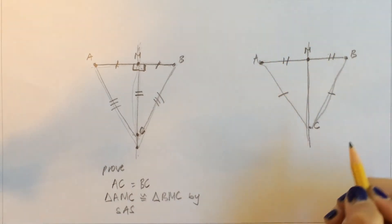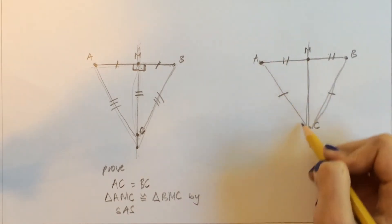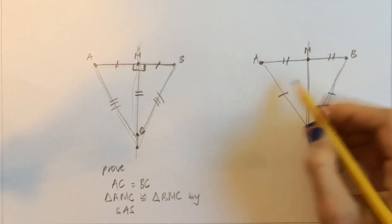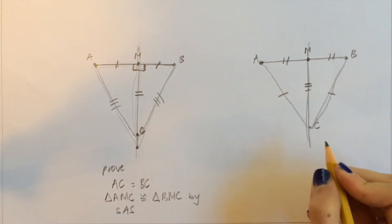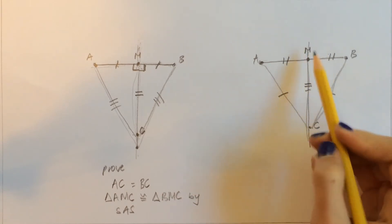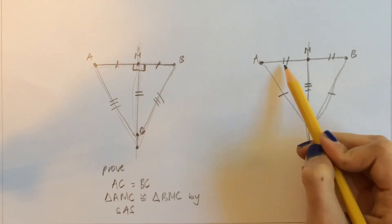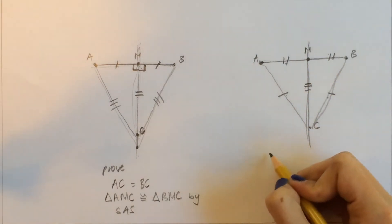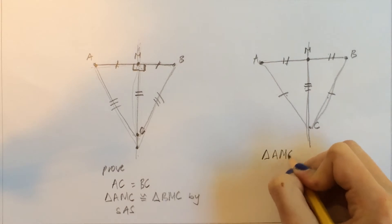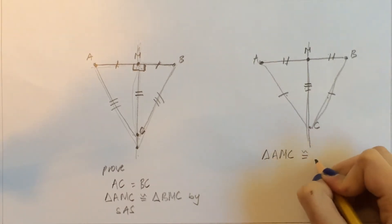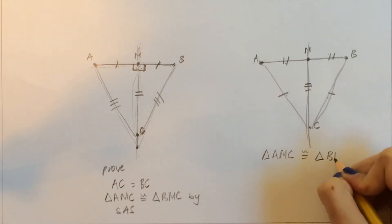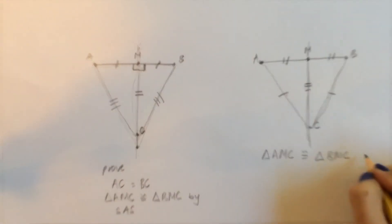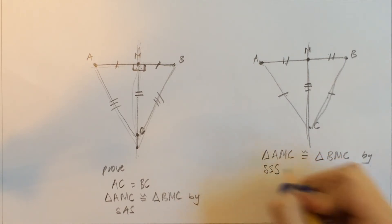Now, what can we do to see if these two triangles are congruent? Well, we also know that MC is equal to MC. So based on the congruence postulate of side-side-side, we can say that triangle AMC is congruent to triangle BMC by SSS — which is side, side, side.